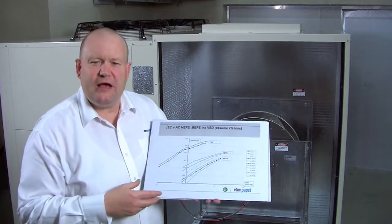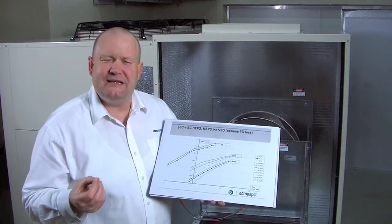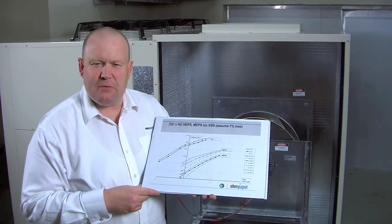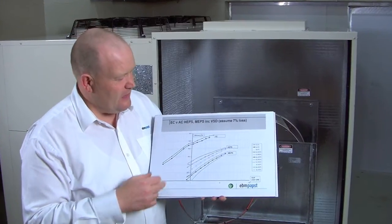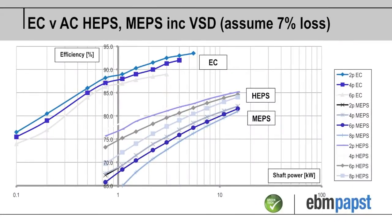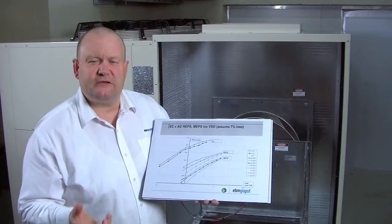In this slide I've compared the difference between EC motors and AC motors under speed control according to the minimum energy performance standards. And here you can see that I've put a VSD calculation on the AC motors and the MET standard and I've assumed 7 percent losses inside the VSD such that we've got an apples for apples comparison between EC.